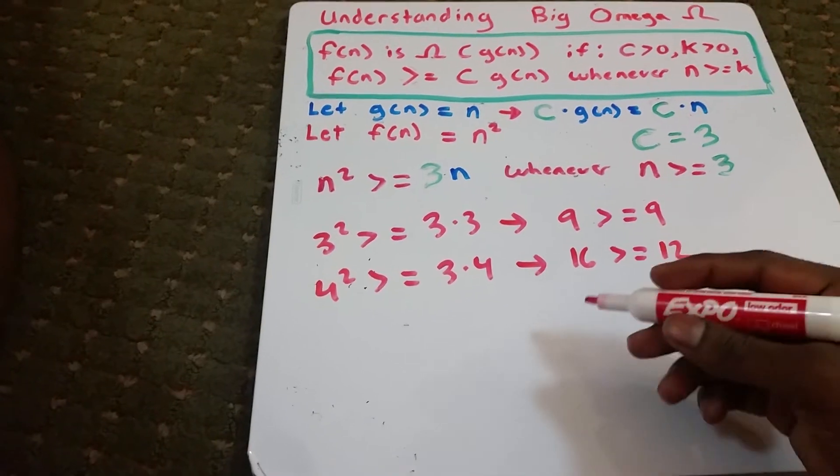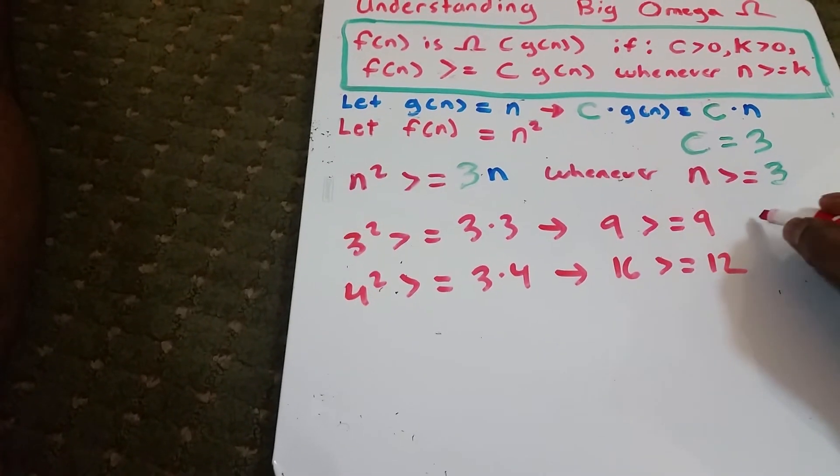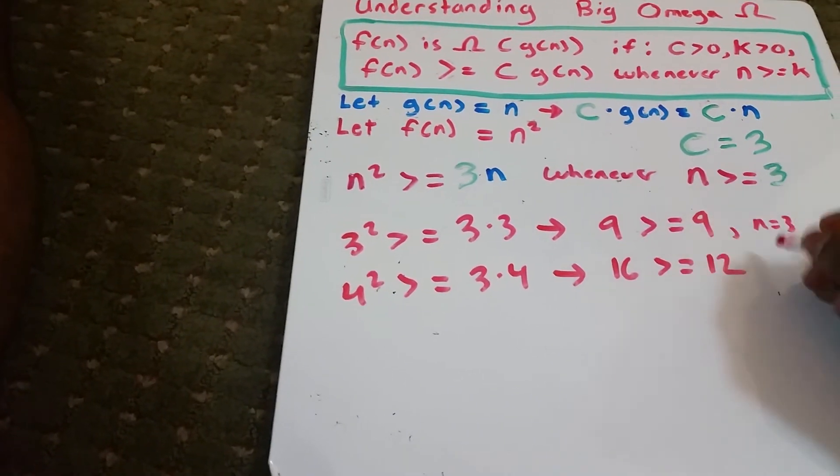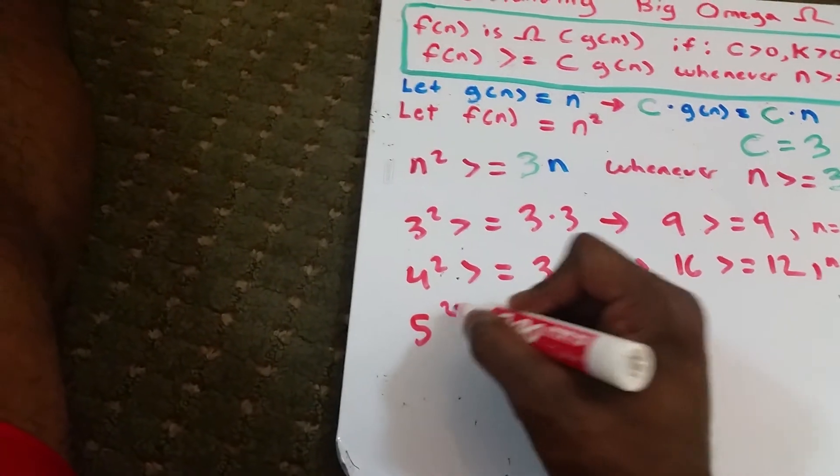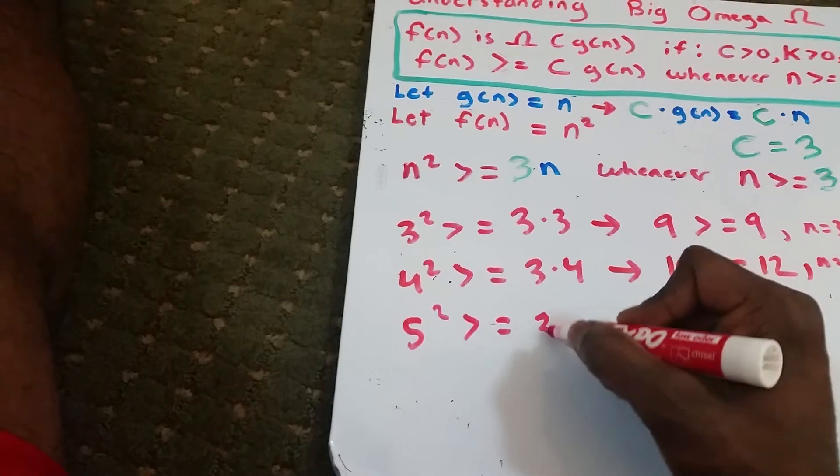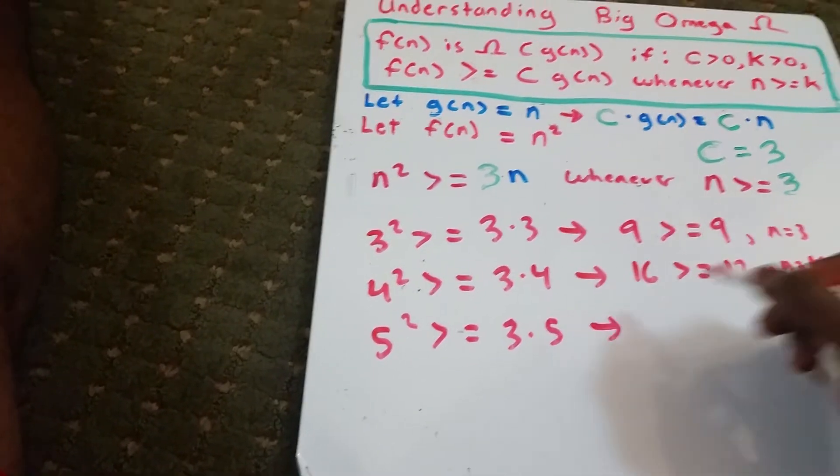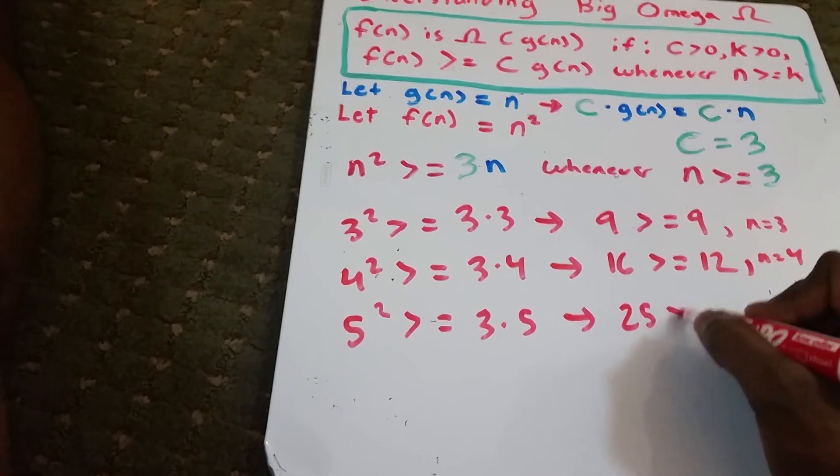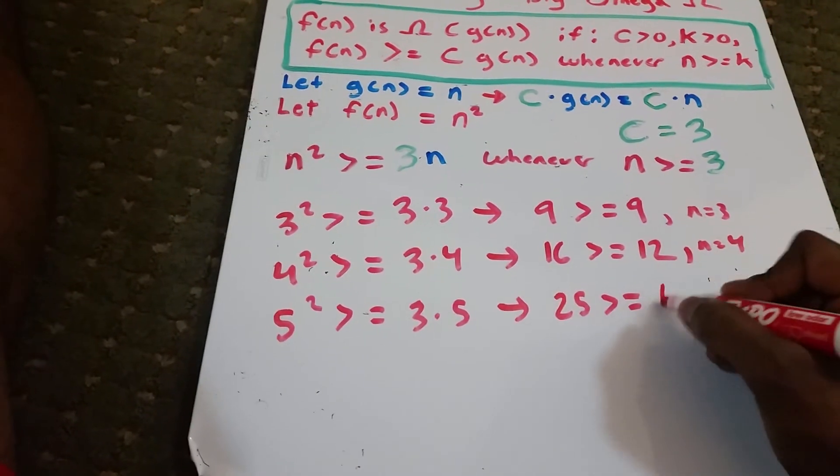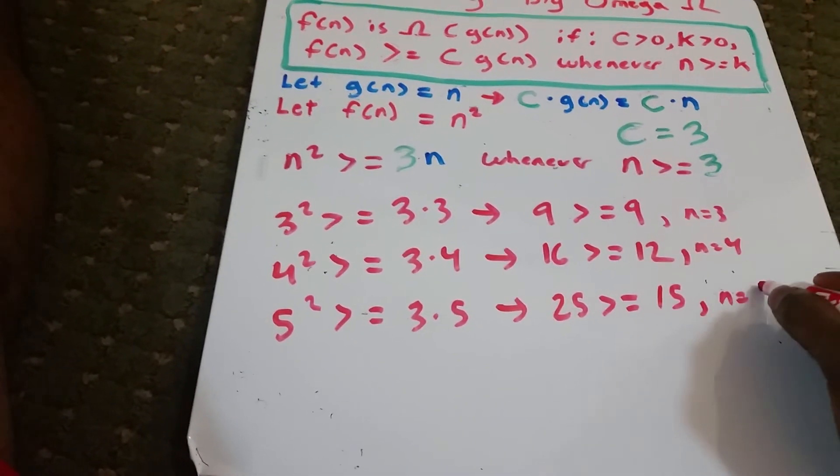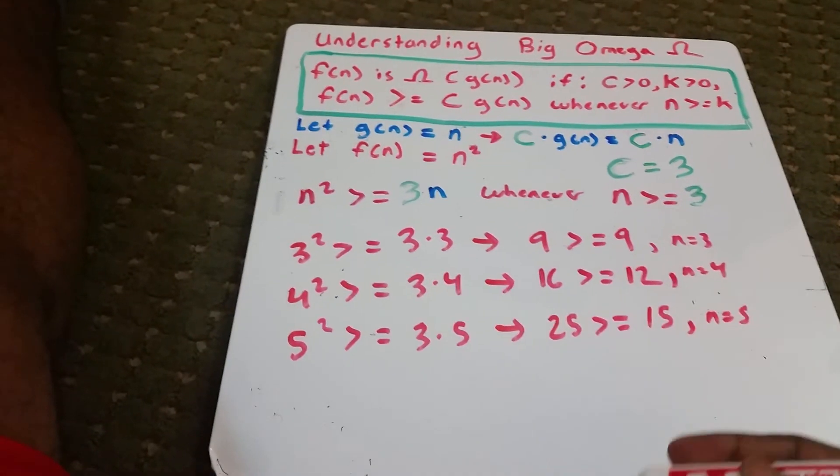Let's do one more. So this was when n equals 3 here, n equals 4 here. We'll do n equals 5. So we get 5 squared is greater than or equal to 3 times 5. This implies 25 is greater than or equal to 15 when n equals 5. And all these statements are always true.